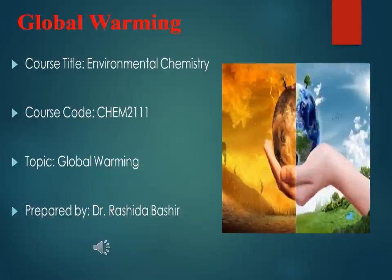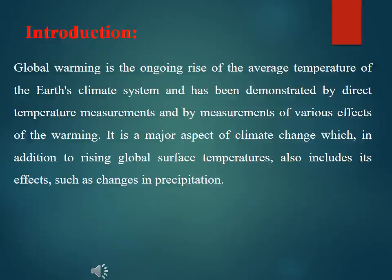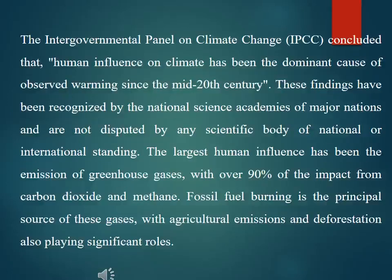Today we are going to discuss global warming with reference to environmental chemistry. Global warming is the ongoing rise of the average temperature of the Earth's climate system, demonstrated by direct temperature measurements and by measurements of various effects of the warming. It is a major aspect of climate change, which includes effects such as changes in precipitation. The IPCC concluded that human influence on climate has been the dominant cause of observed warming since the mid-20th century.